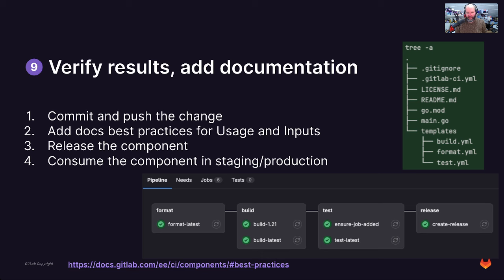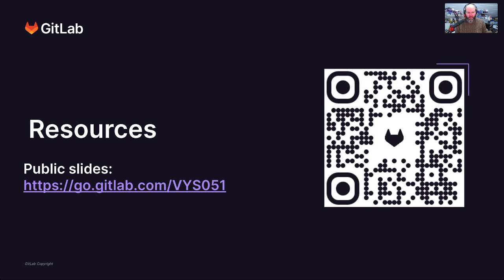If you run that, you'll find different stages being added — `format`, `build`, and `test` inside the component. You can also see the create-release job at the end, which has been added to the pipelines in the component as a best practice. If you want to reproduce what I just showed you with the Golang component, feel free to check out the public slides, which are linked here or provided using the QR code.